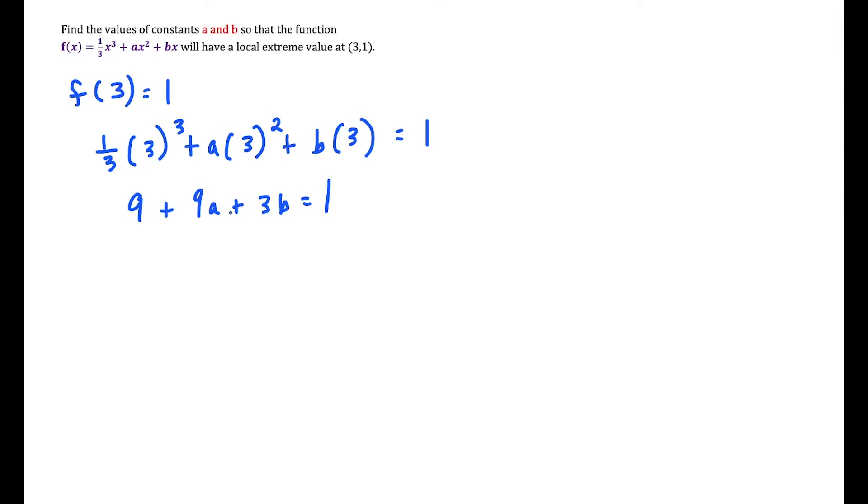This equals 1, which gives us a two variable equation. Even though technically these are constants, we're solving for the value of these constants. If we move this term over, we get the resulting equation 9a + 3b = -8.